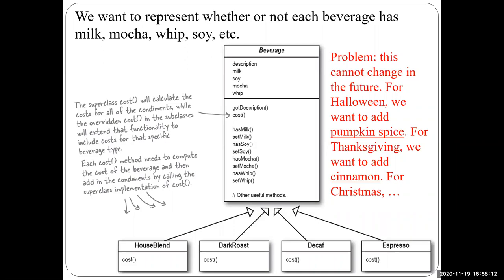The idea is that we want to allow us to add additional spices depending on the season. These spices change in time — something popular this year may not be popular next year. In the future, there is not only soy milk but maybe almond milk or pistachio milk added to this inheritance. One way is to add these as fields into beverage: not only description, but also milk, soy, mocha, whip, almond milk, and so on.